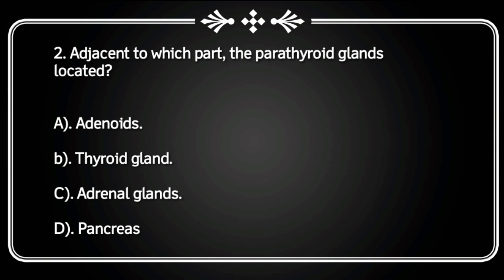Next question: Adjacent to which part are the parathyroid glands located? Adenoids, thyroid gland, adrenal glands, or pancreas? Correct answer is thyroid gland.